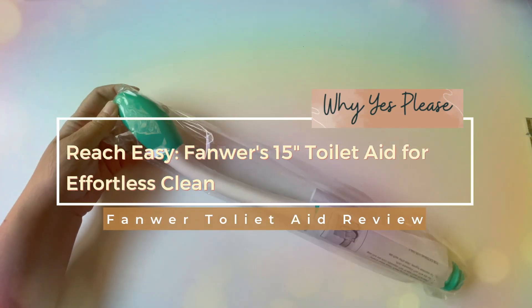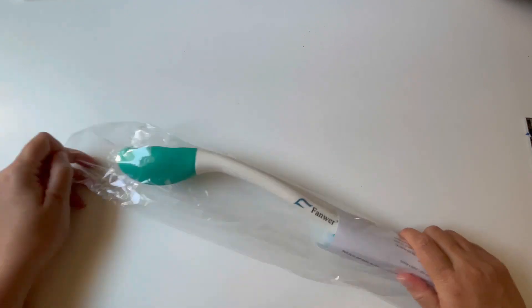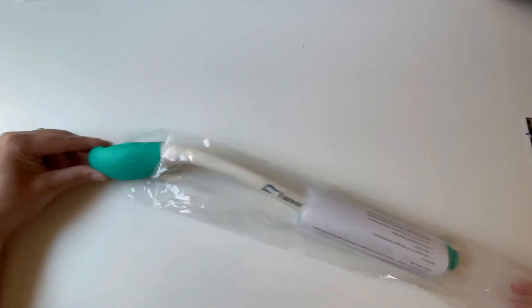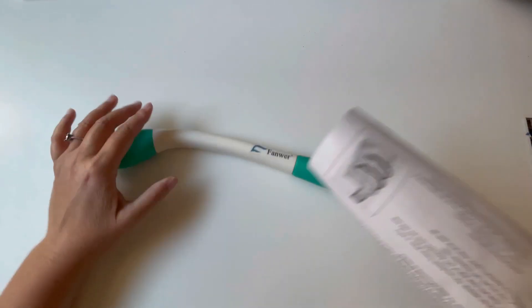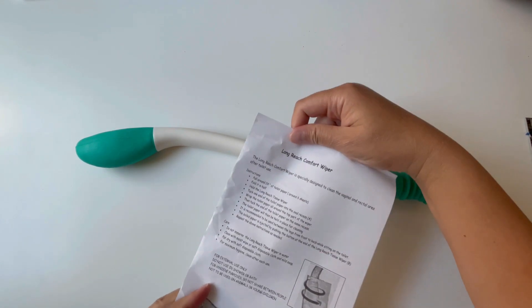Hi friends, this is the Fawner Toilet Aid Tool. This tool was designed specifically to help you reach from the back or the front to wipe yourself. I got this in exchange for an honest review.